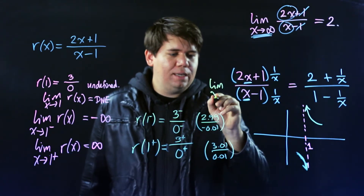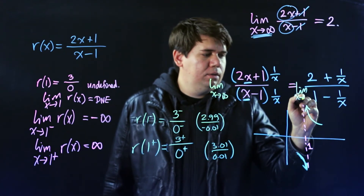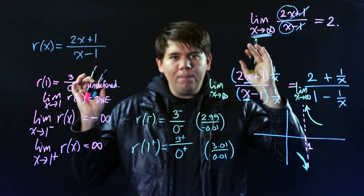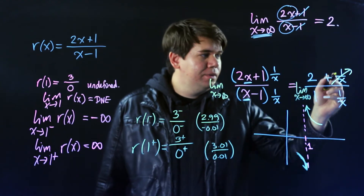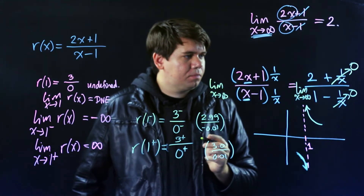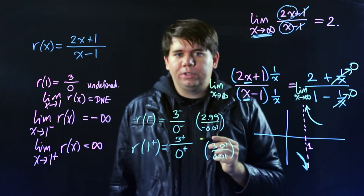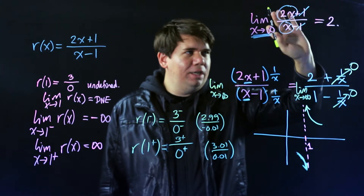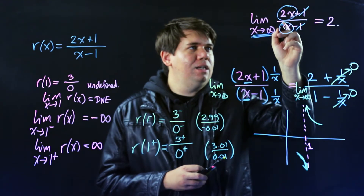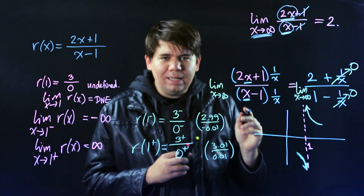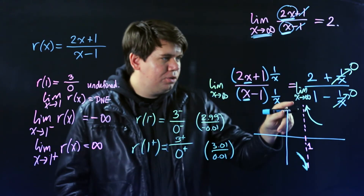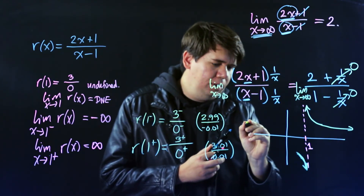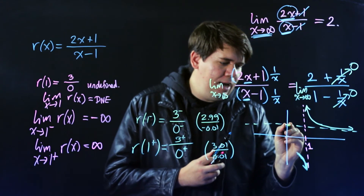Now when we take the limit as x goes to infinity, 1/x — which is 1 divided by a huge number — just goes to 0. So we're left with 2 over 1, which is just 2. This justifies our intuition: the leading terms dominate, and the limit as x goes to infinity is 2. On the graph, as we go to the right, the function gets closer and closer to the horizontal line y = 2.